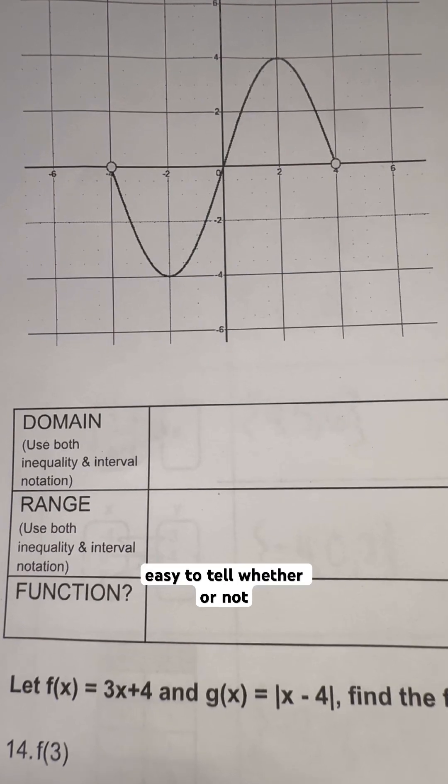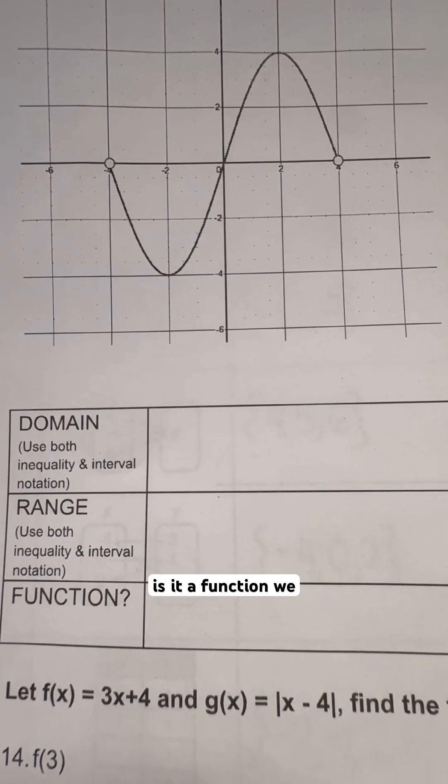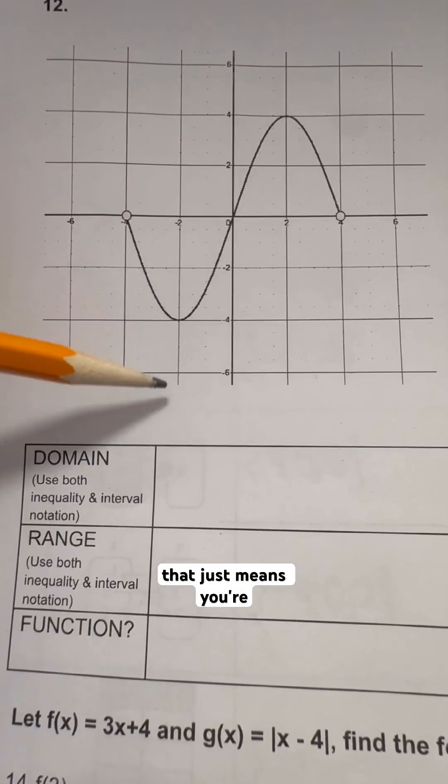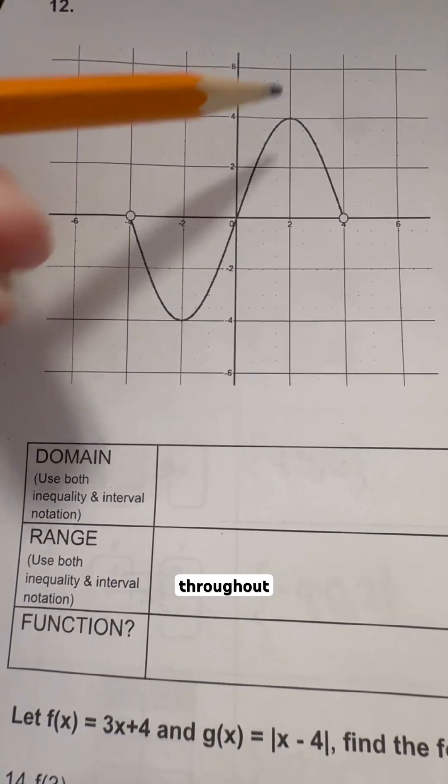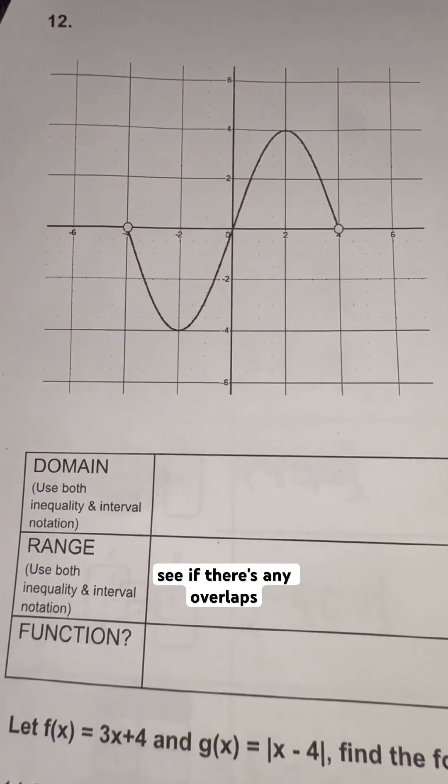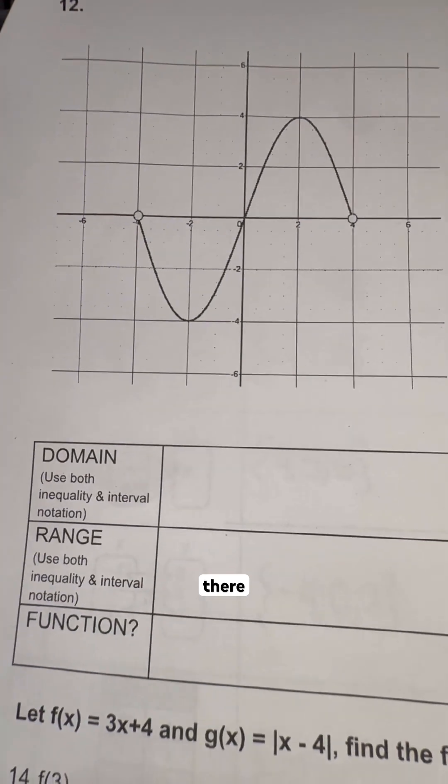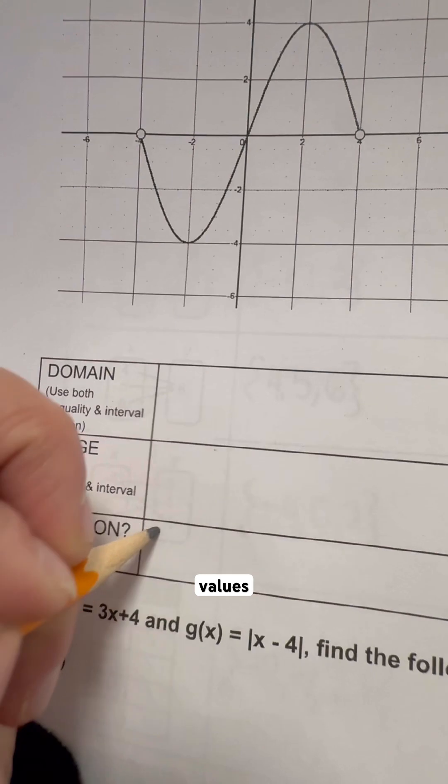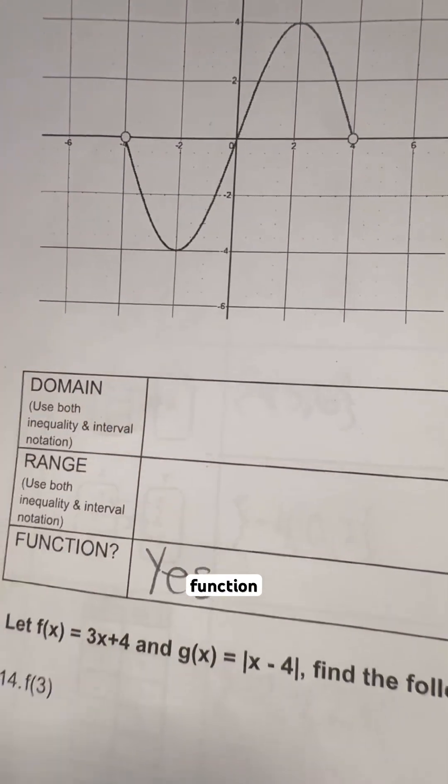First thing, super duper easy to tell whether or not it is a function. We can use the vertical line test, and that just means you're drawing a vertical line anywhere throughout this whole graph to see if there's any overlaps, which in this case there are not. So this means that x is not repeating anywhere with different y values. So this is a function. All right.